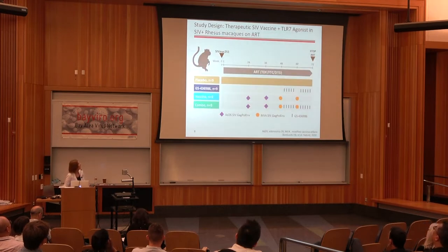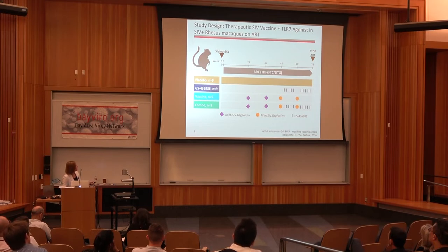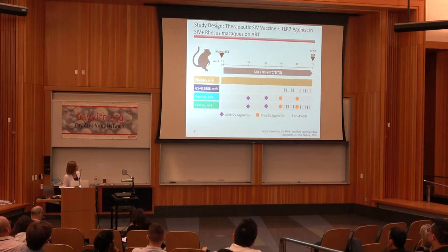One of the first studies we did, in collaboration with Dan Baruch at Harvard, was to combine this TLR7 agonist with a therapeutic vaccine. The vaccine used is the same developed by Janssen — it's an adenovirus 26 vector which encodes three viral proteins: GAG, pol, and envelope. The boost is a modified vaccinia viral vector which encodes the same insert.